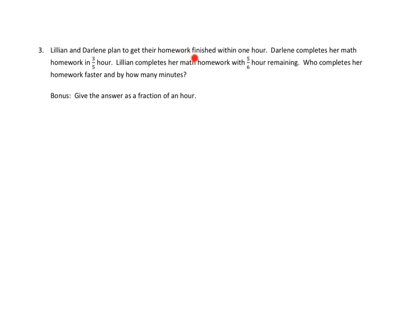Lillian and Darlene plan to get their homework finished within one hour. Darlene completes her math homework in three-fifths of an hour. Lillian completes her math homework with five-sixths remaining. Who completes their homework faster and by how many minutes? Okay, we see that things are denoted in hours and we want to find our minutes. So let's take a look at what we have. We have Darlene and she finished in three-fifths of an hour. And that equals three-fifths times one hour equals three-fifths times sixty equals three times sixty divided by five. We can divide both five and sixty by five. We get twelve. And Darlene gets it done in thirty-six minutes.